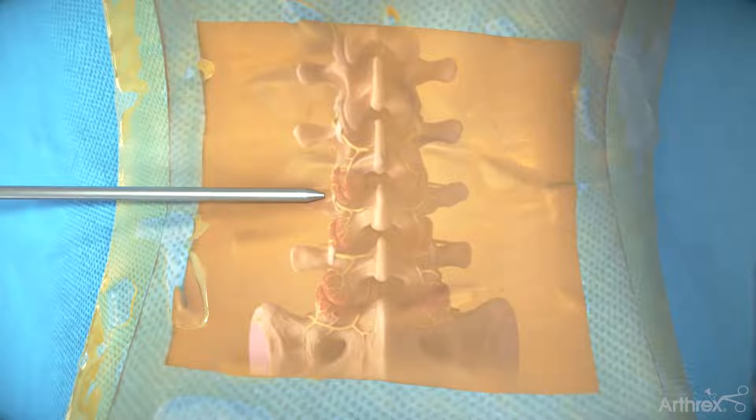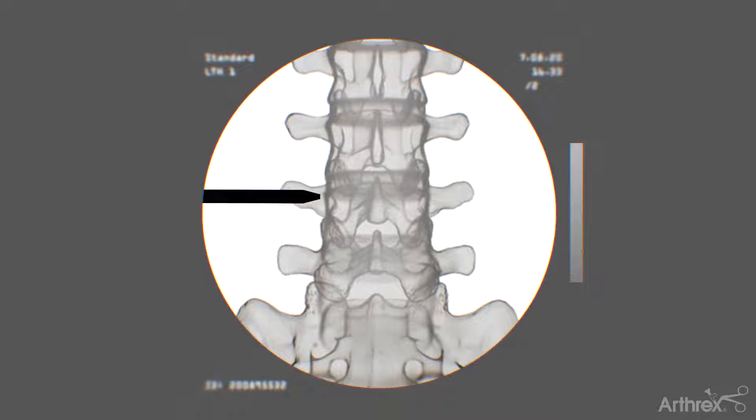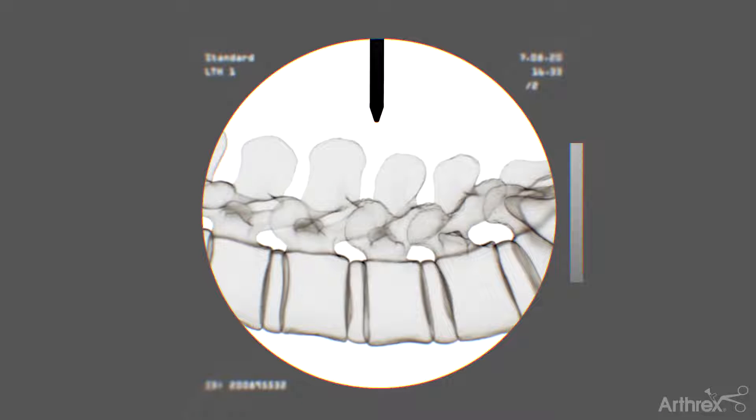Based on the preoperative MRI or CT, use the C-arm to verify the correct level or levels using both AP and lateral images.